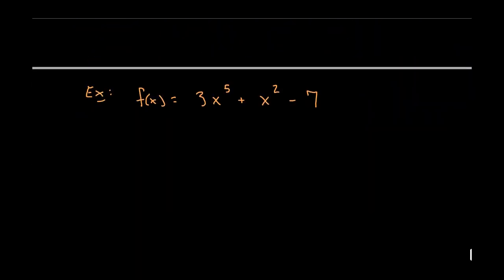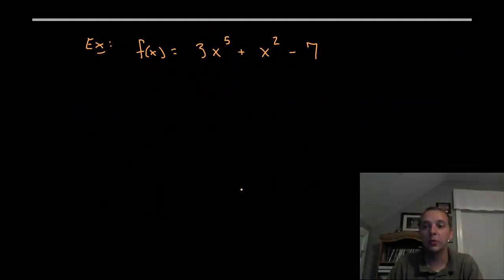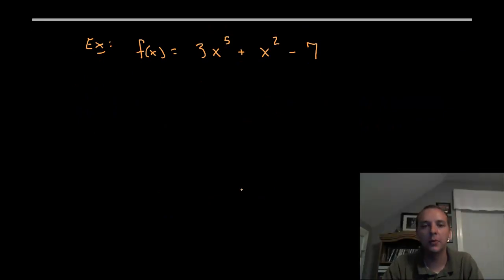So let's just try a few examples here. We are going to start with some real simple ones and then just kind of build up from there. So if here is a function f of x equals 3x to the fifth plus x squared minus 7, we can follow these rules.